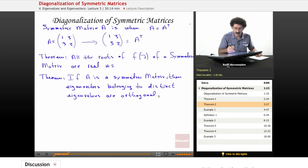Okay, so once again, if A is a symmetric matrix, then the eigenvectors belonging to distinct eigenvalues are orthogonal.